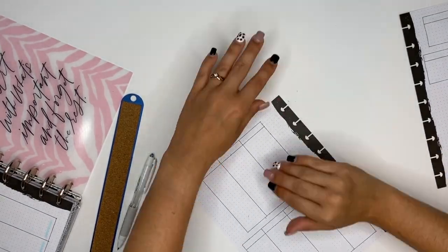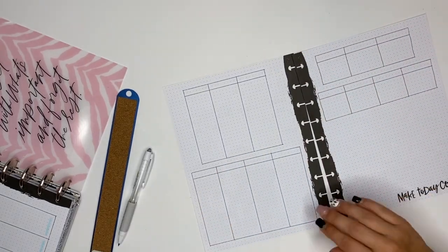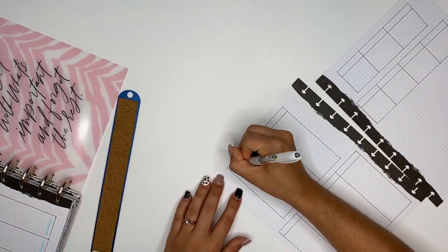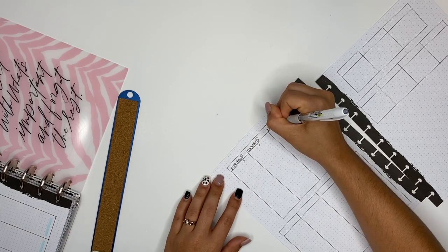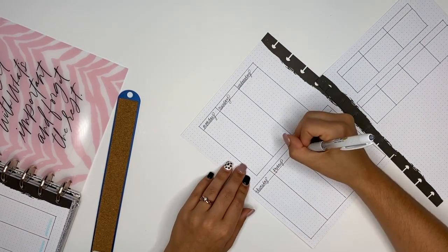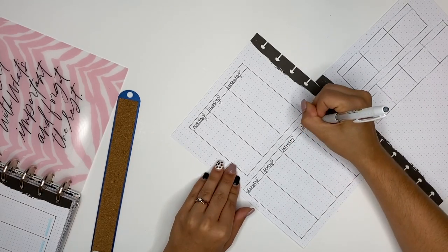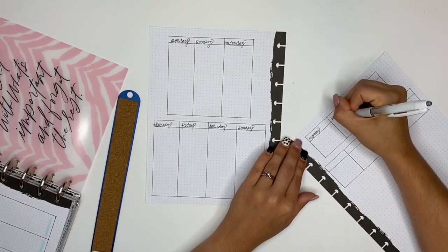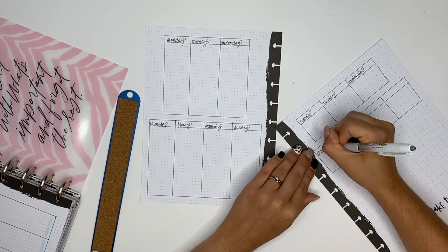Okay, so now I am taking a Signo Uni Ball pen. I'm not sure what size it is, I think it's like 0.3 or 0.5. I love this pen, it's fantastic.